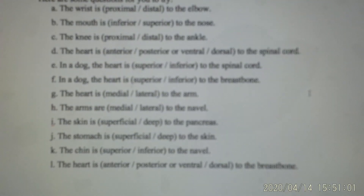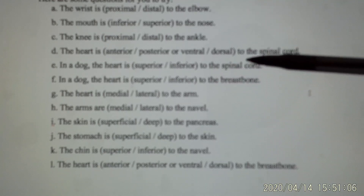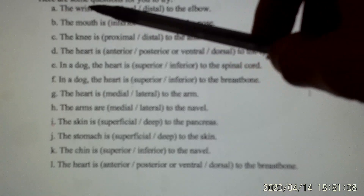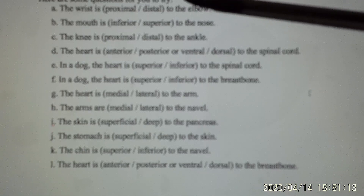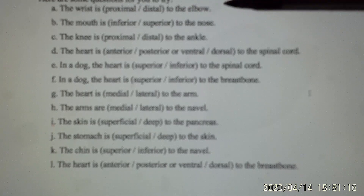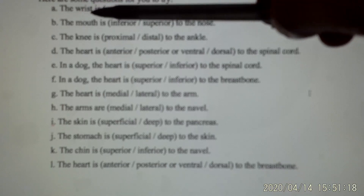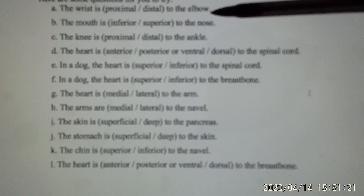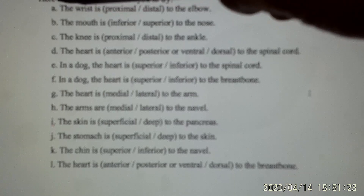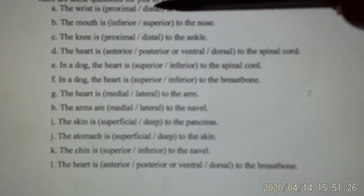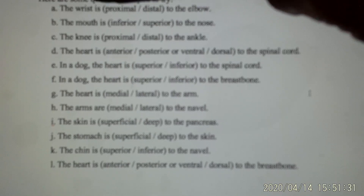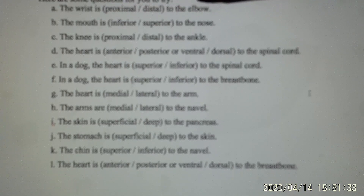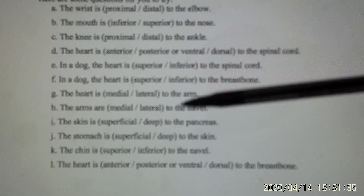We also have some practice questions, which should be very straightforward. For example, the wrist compared to the elbow — the wrist is more distal and the elbow is more proximal. So the correct answer would be: the wrist is distal to the elbow. Or, you could say the elbow is proximal to the wrist. These are some practice questions for you.